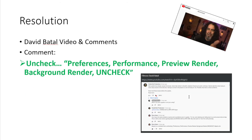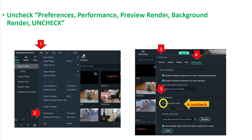I found a resolution on David Battelle's video and its comment section: go to Preferences, then Performance, find Preview Render, and uncheck the box for background render. Here's what it looks like — you go to File, Preferences, then look at Performance, come down to Preview Render, and uncheck background render. Very simple. It solved most of my problems.